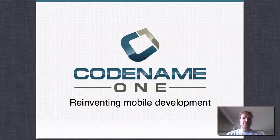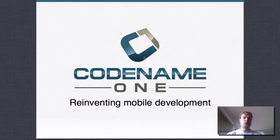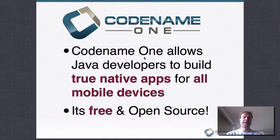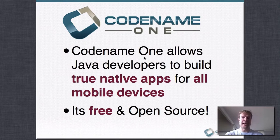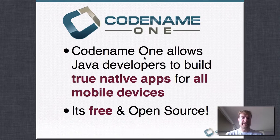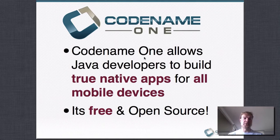Let's move on to the presentation. My name is Steve Hanna and I work for Codename One. We're working to reinvent mobile development. Codename One is a toolkit that allows Java developers to create native apps for all mobile devices — Android, iOS, Windows Phone, even JavaScript, J2ME, and Blackberry. It's free and it's open source.